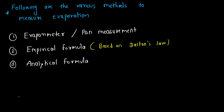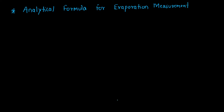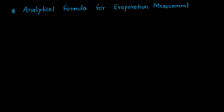After completion of empirical formulas, we will now start the analytical formulas for the measurement of evaporation. The difference between analytical and empirical formulas is that empirical formulas like Meyer's formula and Rohwer's formula don't have a mathematical derivation — they are derived based on practical or on-field experimentations. Formulas that have some mathematical proof and can be derived are called analytical formulas.